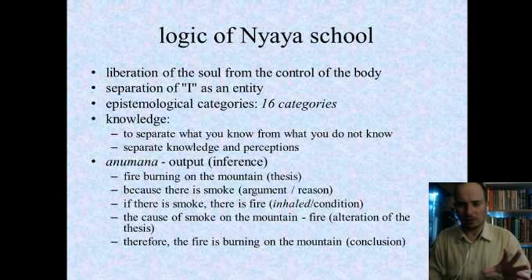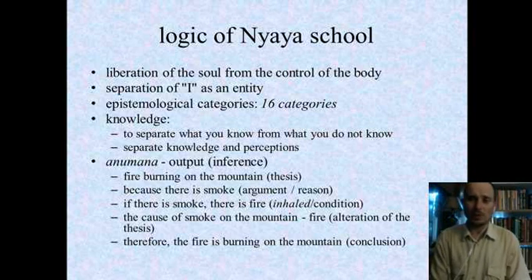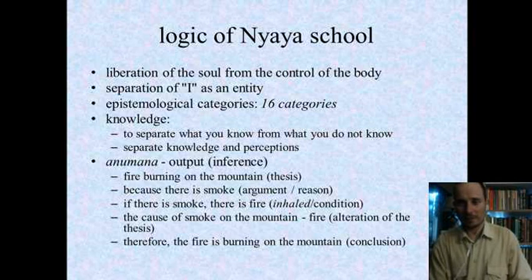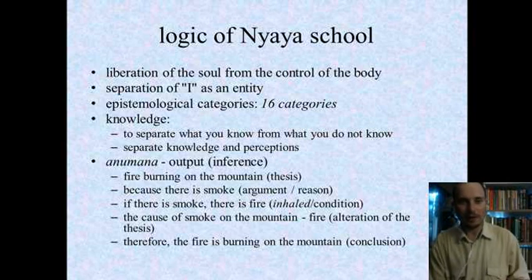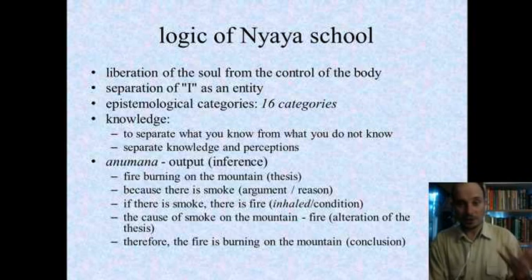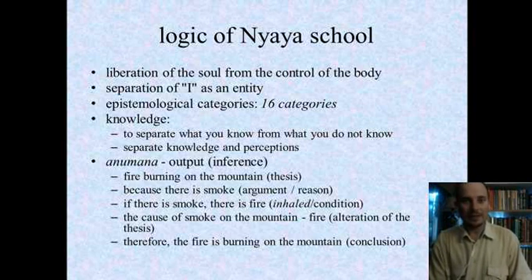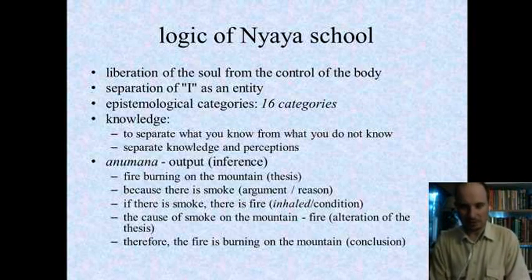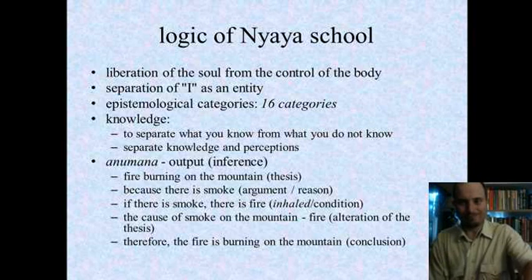Anumana means inference. The Nyaya syllogism has five premises instead of Aristotle's three. Example: (1) Fire is burning on the mountain — the thesis to claim; (2) because there is smoke — the reason; (3) smoke is caused by fire — the universal condition; (4) the mountain has smoke — the application; (5) therefore fire is burning on the mountain — the conclusion. A similar structure to Aristotelian syllogistics but with two added elements.